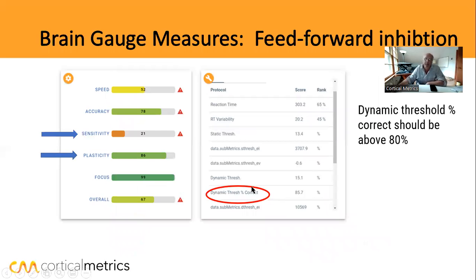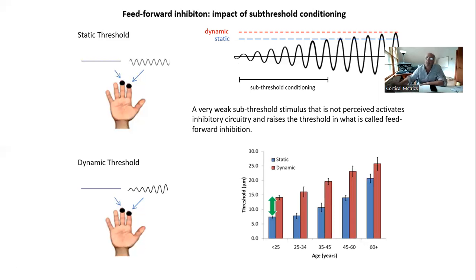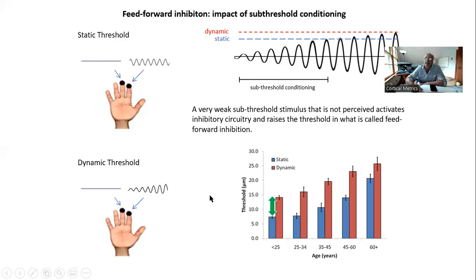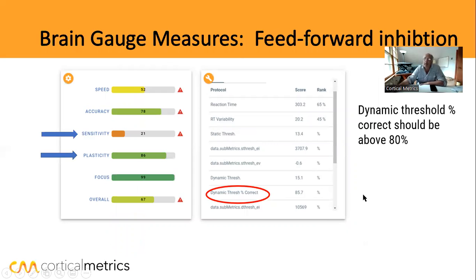It's very important that the dynamic threshold percent correct is above 80% — it requires a genuine response. What can happen is that when the stimulus is ramping up, if somebody just hits a button and selects a finger before they can actually feel the stimulus — because they're just guessing — they're going to get it wrong. They need to wait until that stimulus is large enough to feel. If that number isn't large, they're just trying to get through the test as fast as possible — and that does happen, especially with some adolescents.